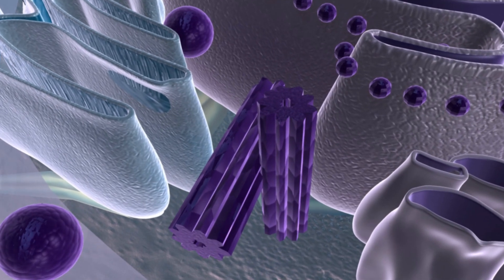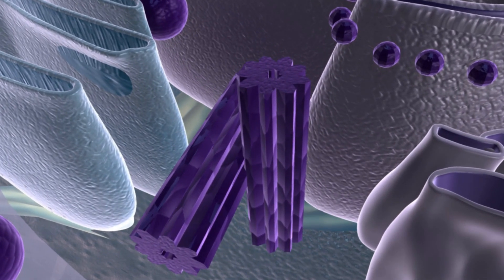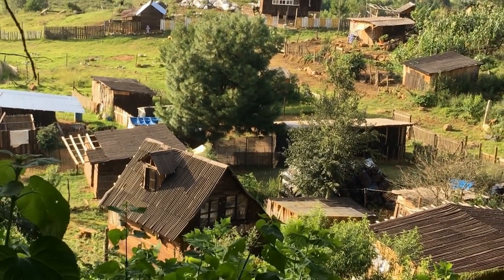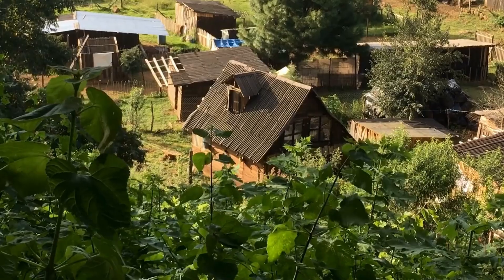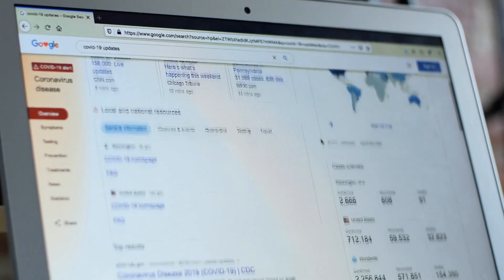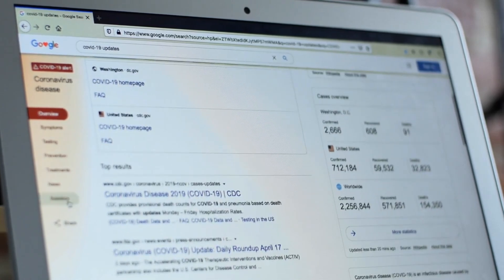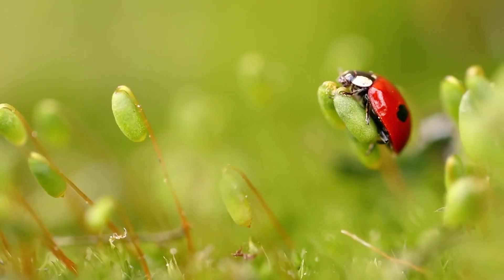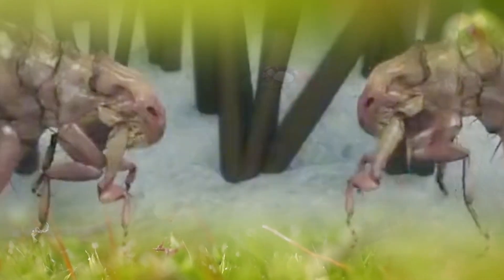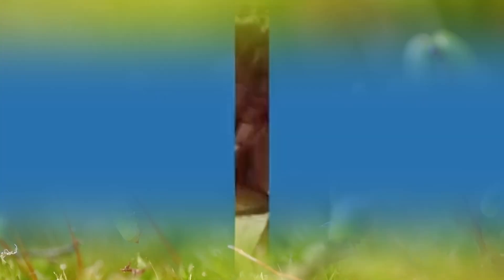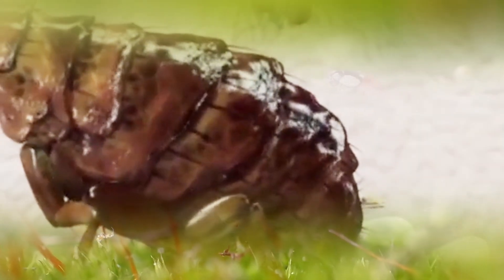The sand flea, Tunga penetrans, is widely distributed in Latin America and Africa, with human tungiosis being a public health concern, especially in impoverished communities. This study aimed to assess the infection rate of Wolbachia in a T. penetrans population in a highly endemic area in northeastern Brazil. The results indicate that all sand fleas in this area are infected with Wolbachia, with the endobacteria detected not only in hypertrophied female fleas of different stages but also in eggs and free-living adult fleas.